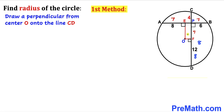Since we are dealing with rectangle OFPE, if side PF is 4, then side OE is going to be 4 units as well.